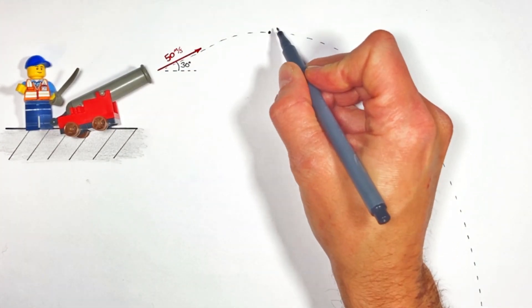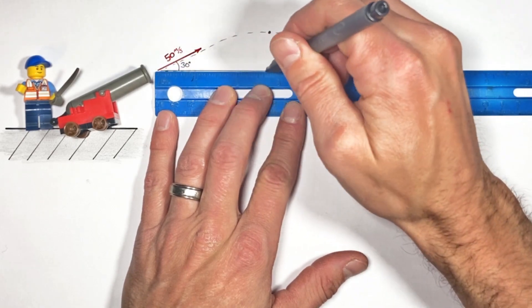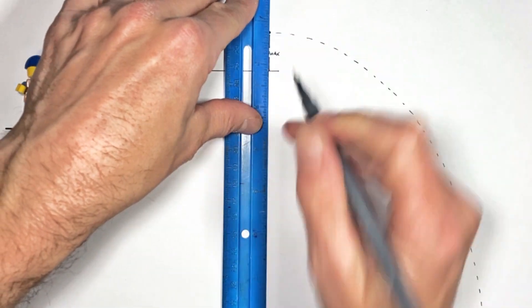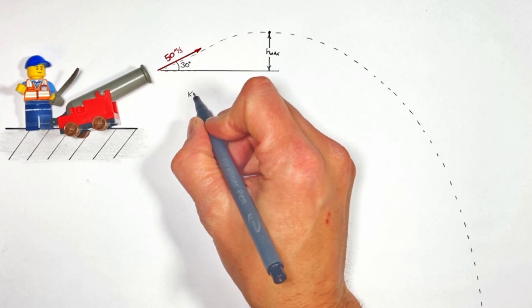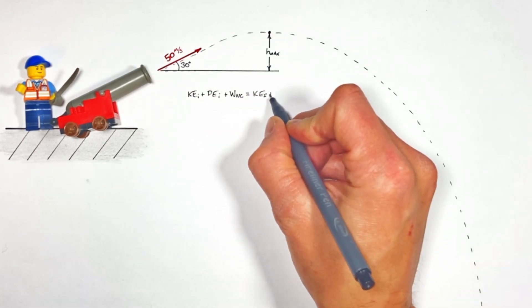The first thing I want to solve for is the maximum height which the projectile is going to reach above the point from which it was fired. Rather than using the kinematic equations, we're going to use the conservation of mechanical energy.